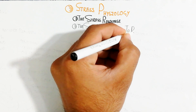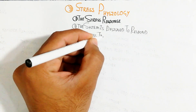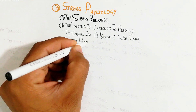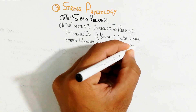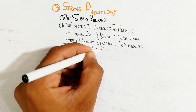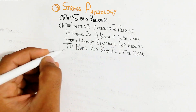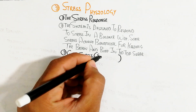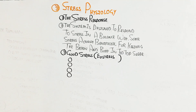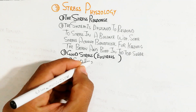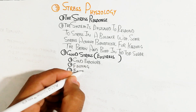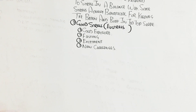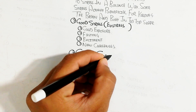The stress response is a system designed to respond to stress in a balanced way, which leads to normal function. Some stress is actually beneficial for keeping the brain and body in tip-top shape. This good stress is known as eustress. Eustress can include cold exposure for a short duration, fasting for a short duration, excitement, and new challenges, which lead to more learning, improved brain function, and improved body performance like exercise endurance and hard running.